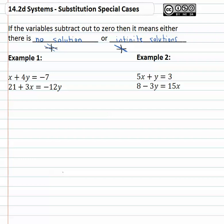So let's see if we can identify what's happening here with this first example. x plus 4y equals negative 7, and 21 plus 3x equals negative 12y. We see this lone variable here of x. We want to get him alone. To do that we got to get rid of the plus 4y, and we can do that with negative 4y on both sides.